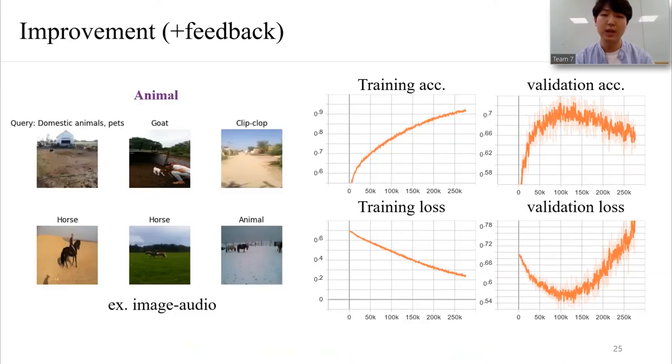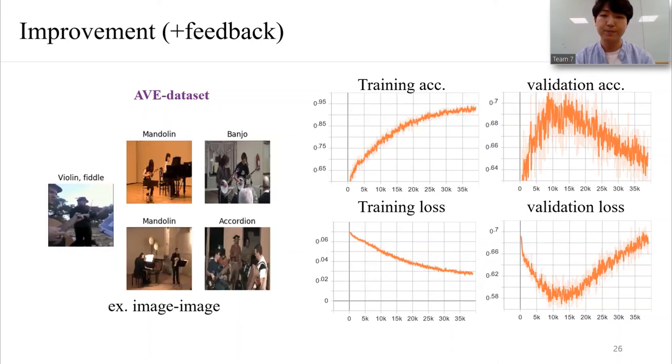We first tested on animal data. When we query a domestic animal or a patch image, the results are good. And this is our new data, AVE dataset results. The outcomes are also reasonable.